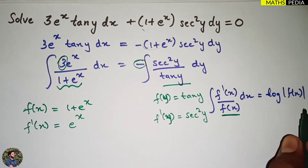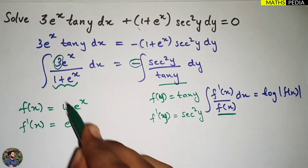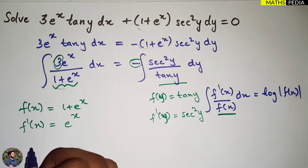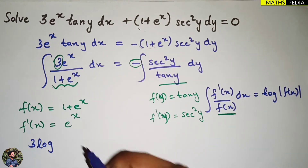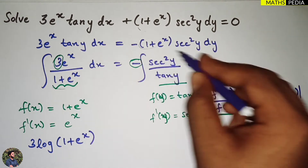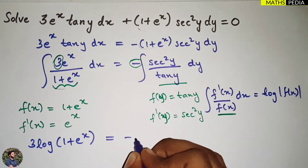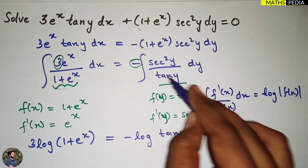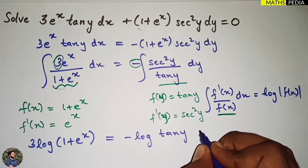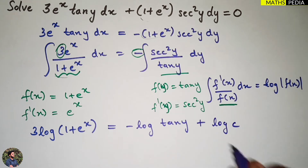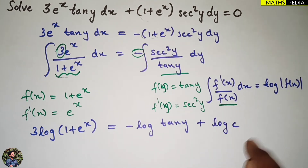There is one extra term: a factor of 3 on the left and a minus sign on the right, but the rest remains the same. So we can directly write the answer: the left side gives 3 log(1 + e^x), and the right side gives minus log(tan y). We add the arbitrary constant as log c — since we have log terms, we write log c instead of just c.